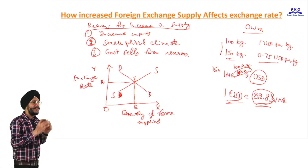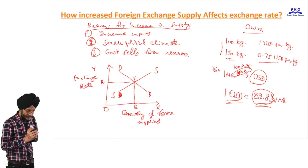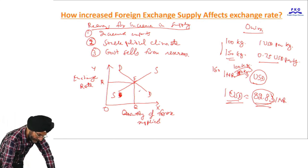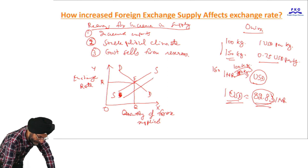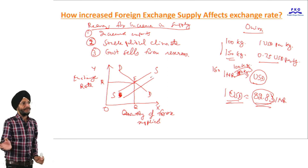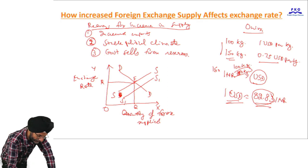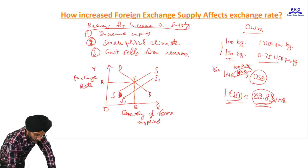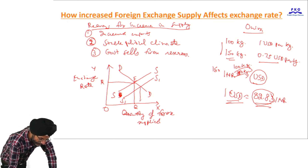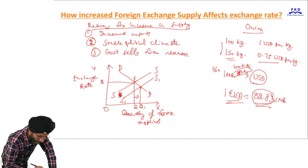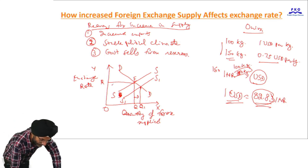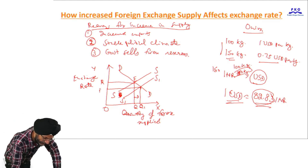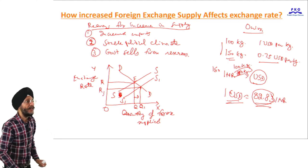When there is an increase in supply, this supply curve shifts to the right and the supply curve becomes S1S1. Supply has increased from OQ to OQ1. This has resulted in a decrease in exchange rate.